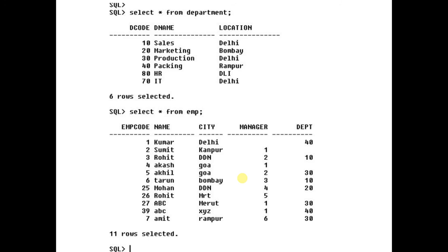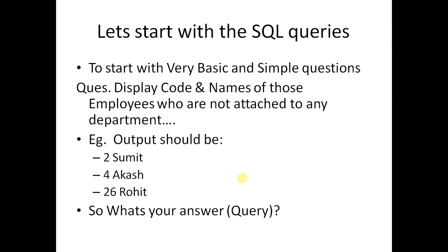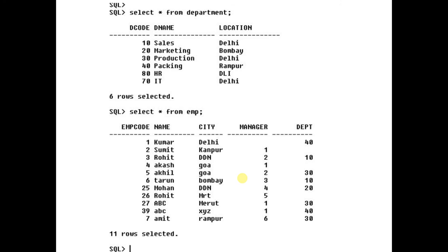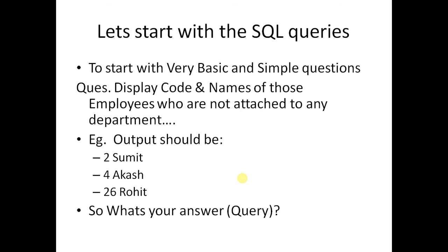Now let us start with a very basic question before we move to subquery-related questions. The first question is: display the code and names of those employees who are not attached to any department. The output should include Sumit, Pankaj, and Rohit. If you look at the values, employee number 2, employee number 4, and employee number 26 do not have any department code, so records of these three employees should be displayed. Try to answer that query in your laptop and check the result.